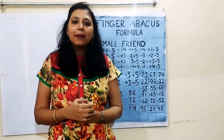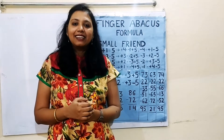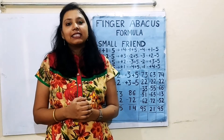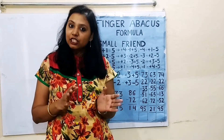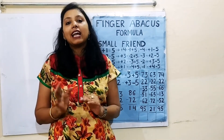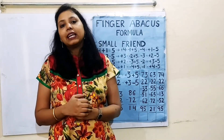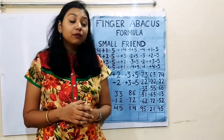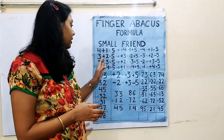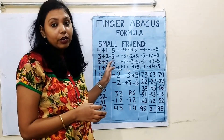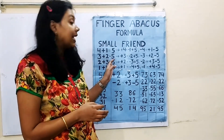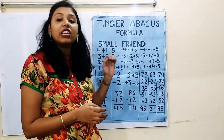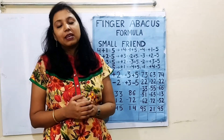Hi guys, welcome back to my channel. This is the English version of class 9 finger abacus. In this class, we are going to discuss the third point of small friend, that is 2 plus 3 equal to 5.